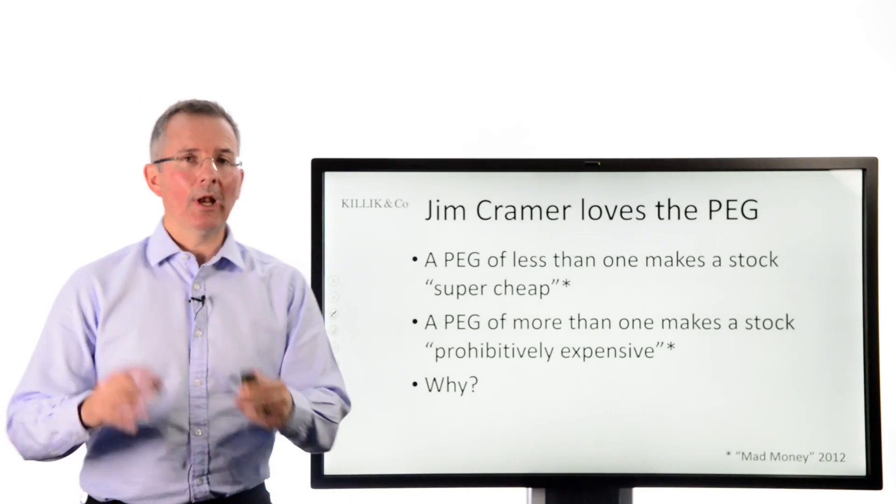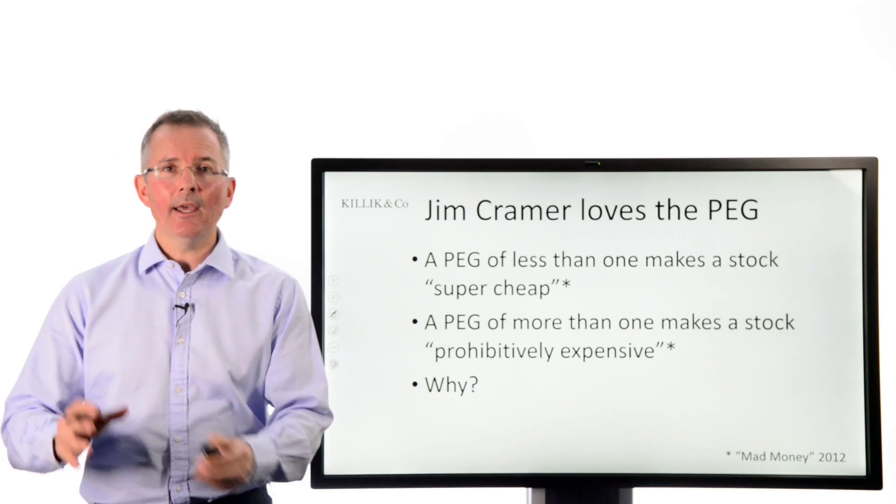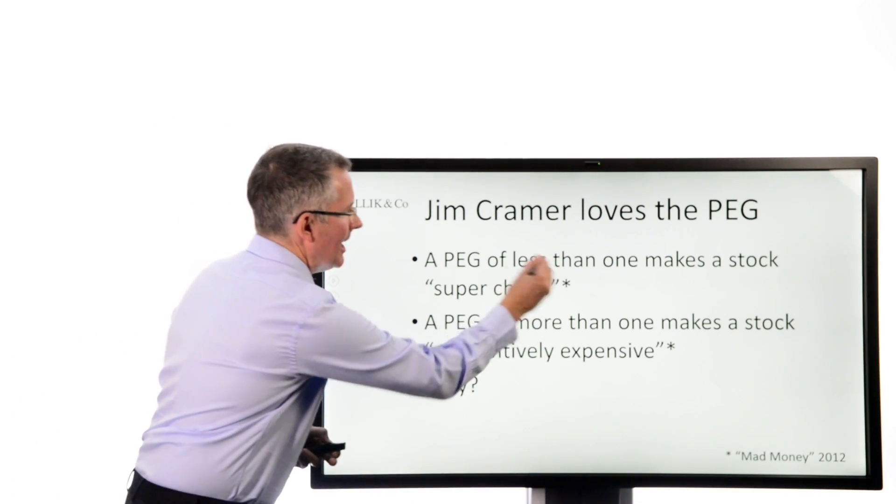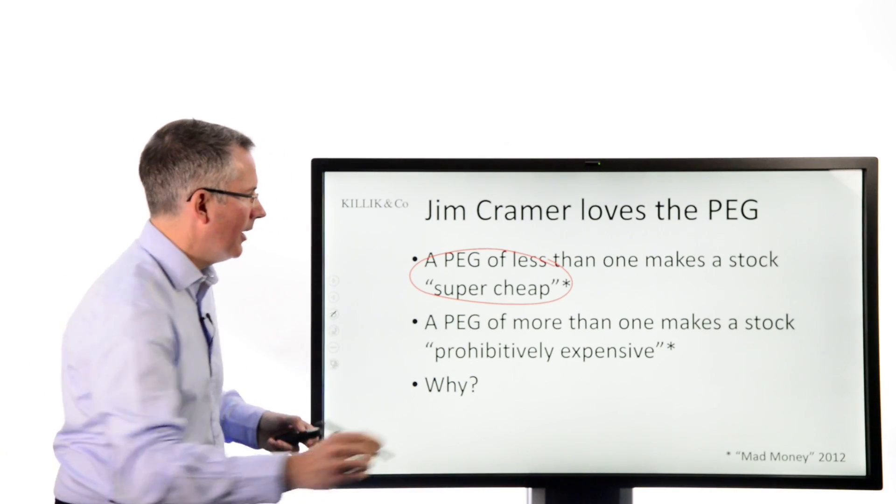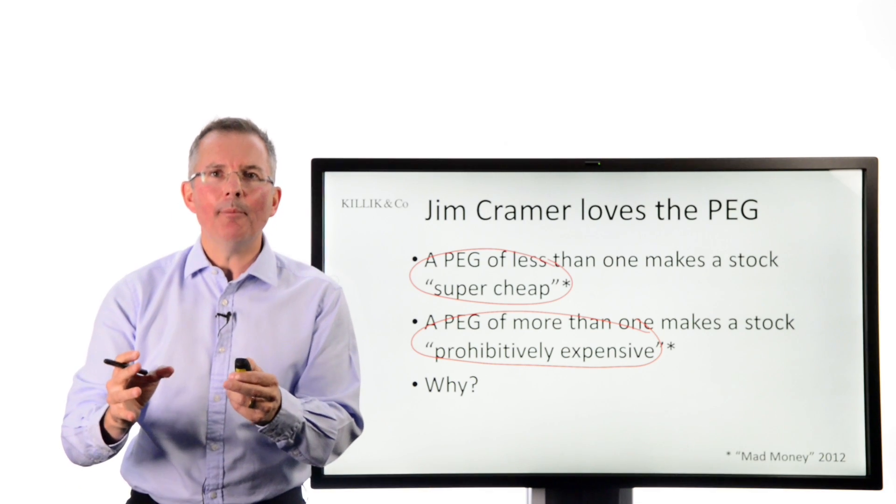So who likes it? Well, amongst its fans is Jim Cramer, CNBC fame and so on. He's been known to say a PEG of less than one makes a stock super cheap. Sounds good. A PEG of more than one is a warning sign, prohibitively expensive is the phrase he used.